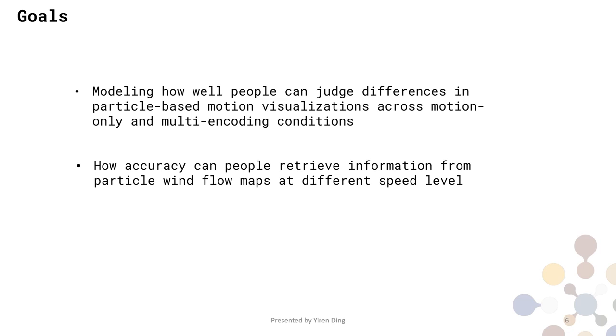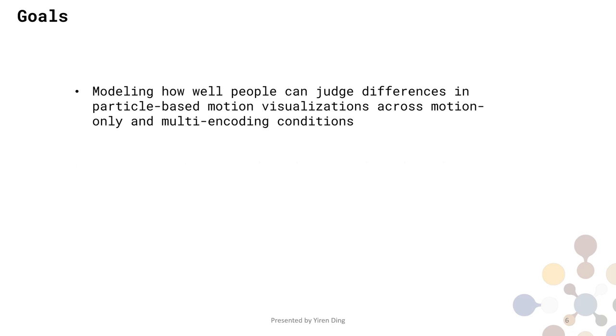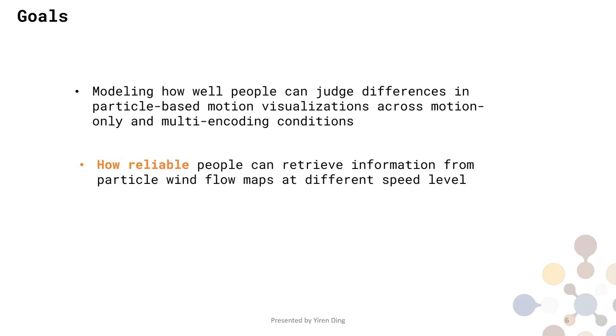In this study, we want to model how well people can judge differences in particle motion maps in two conditions: motion only condition and motion paired with other static channel condition. A natural way to model this is to investigate the accuracy of people's judgment. However, motion does not compete bandwidth with other static channels. Indeed, motion increases the bandwidth of the visualization interface. So we are more interested in how reliably people can retrieve information from particle wind flow maps at different speed levels.